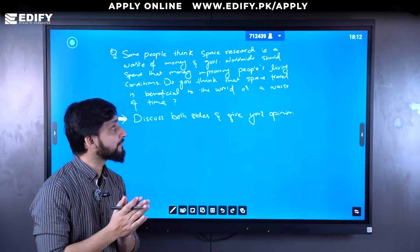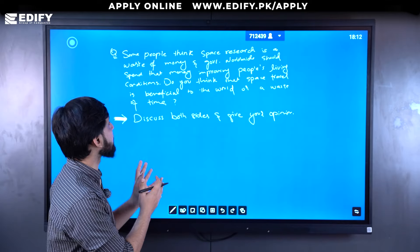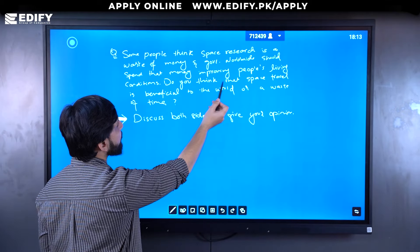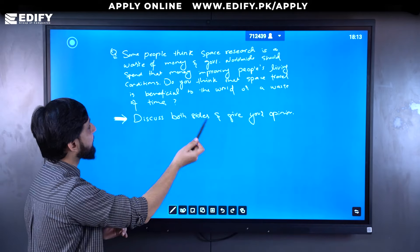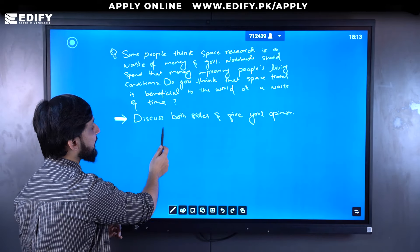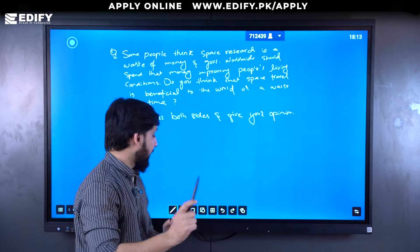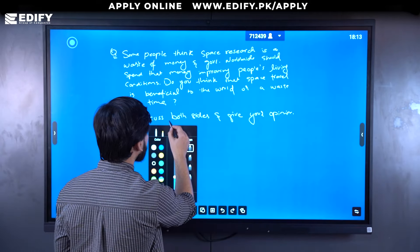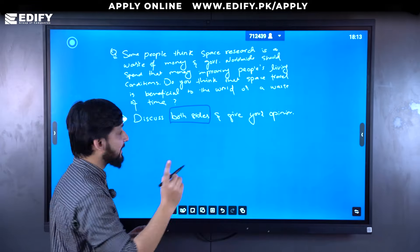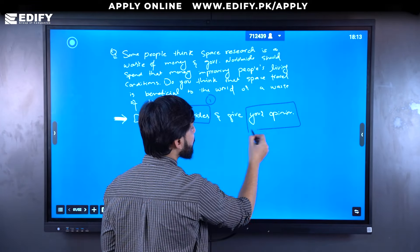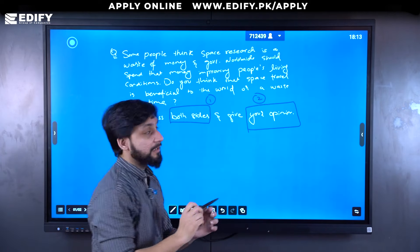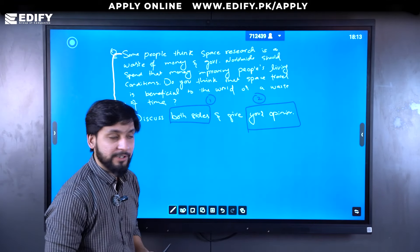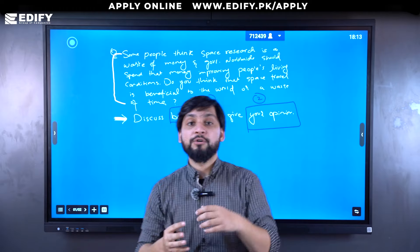Let's move on to the question. The question is: 'Some people think space research is a waste of money, and governments worldwide should spend that money improving people's living conditions. Do you think that space travel is beneficial to the world or a waste of time? Discuss both sides and give your opinion.' This portion is the actual question and we have to cater to it.